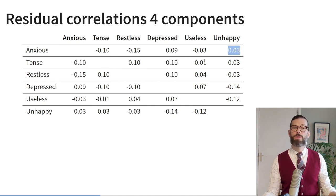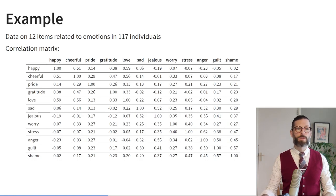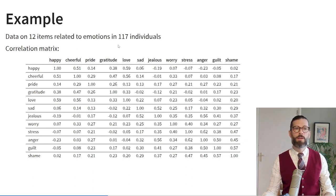That's everything you need to know about principal component analysis. Now let's look at exploratory factor analysis. We will use data on 12 items related to emotions in 117 individuals. We measured people's happiness, cheerfulness, pride, gratitude, love, sadness, jealousy, and other emotions. We can use exploratory factor analysis anytime we're comfortable assuming that there are latent variables that cause people's responses to the items. EFA is a suitable technique when your theory implies the existence of some latent variables.